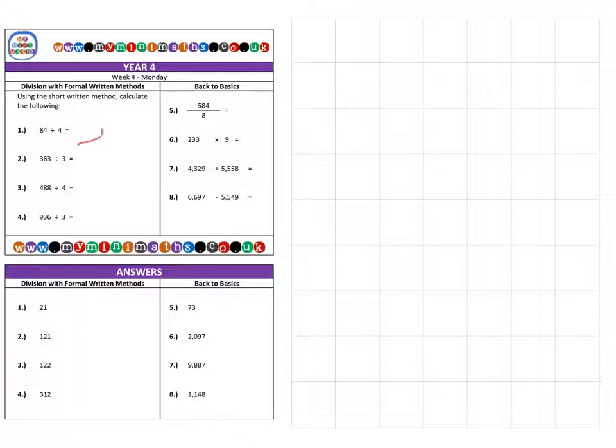First of all, onto question one which is 84 divided by 4. For these questions I'm going to use the short method. Some children call it the bus stop method, so I'll explain what it's doing as well as how to work through the calculation.